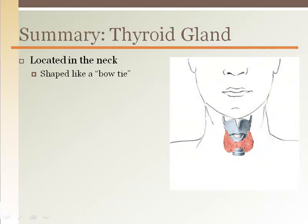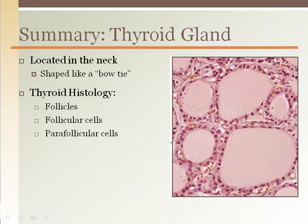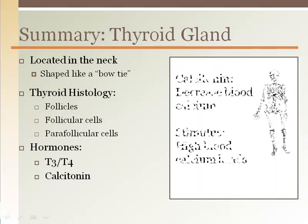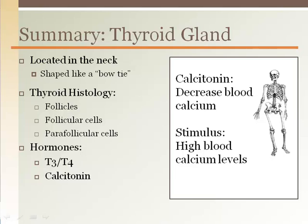In summary, the thyroid gland is located in the neck with a narrow central region and enlarges as it wraps around the airway. Histological features include circular pools called follicles surrounded by follicular cells with adjacent parafollicular cells. It releases two hormones that affect metabolism — T3 and T4 — and calcitonin, which decreases blood calcium levels.